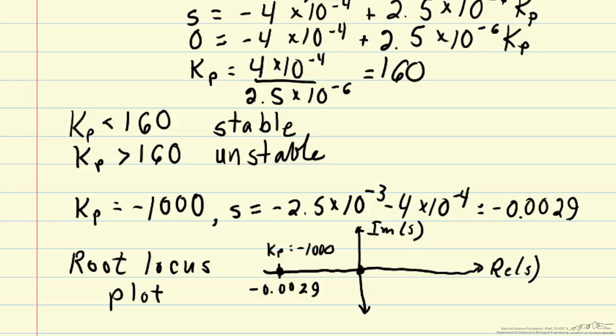In fact, we can get any value of the real part of s for an appropriately chosen value of kp. We can set s to be anything and solve for kp. Our root locus actually goes from negative infinity to positive infinity here.